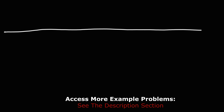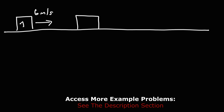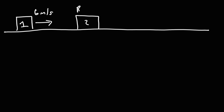Let's use an illustration to see how energy is transferred by means of forces. Say we have a block — block 1 — sliding across a horizontal frictionless floor moving at 6 meters per second, and it strikes block 2 which is at rest. After the collision, the two blocks stick together and move at 2 meters per second. We have an inelastic collision here, which means some of the initial kinetic energy of block 1 will be lost as thermal energy.